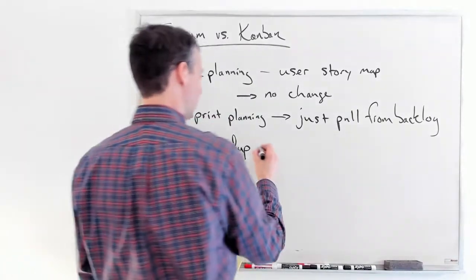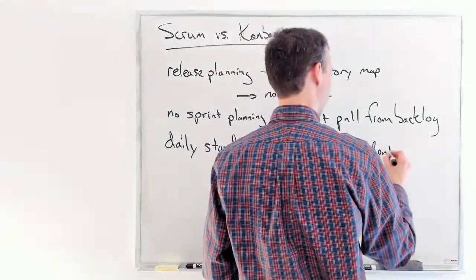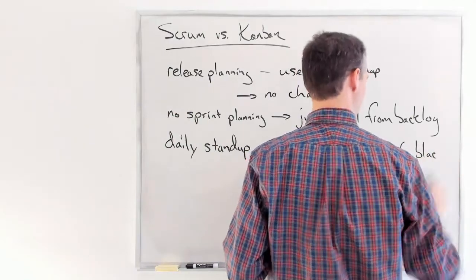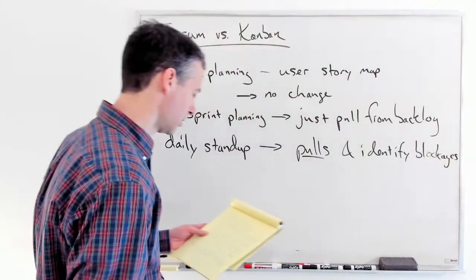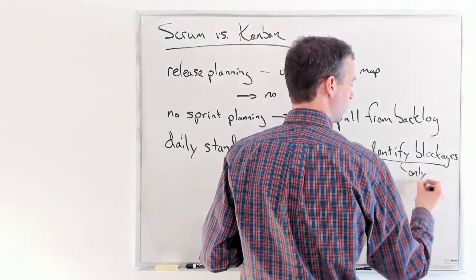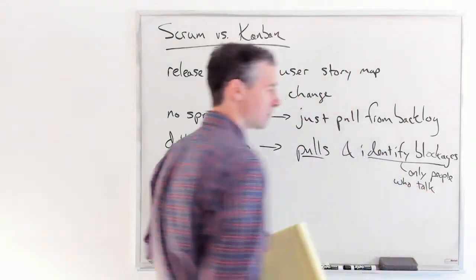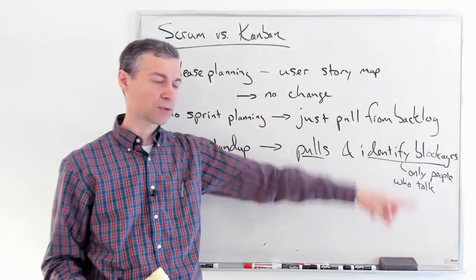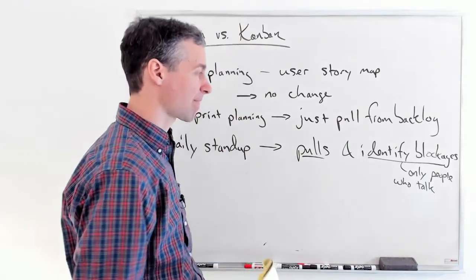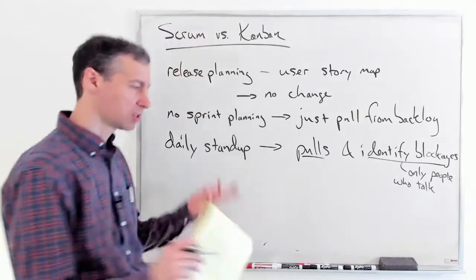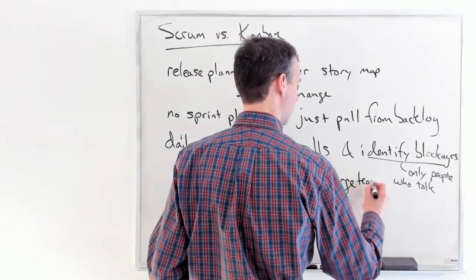What about the daily stand-up? This is all about doing pulls and identifying blockages. We update what's done first before we can do the pulls, then we identify our blockages. When we can see from the Kanban board that stuff's not flowing through it, we talk about why the work is stuck. We talk about problems — we don't just give status updates. This lets us handle a large team actually very nicely.